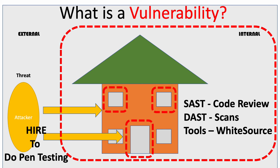The other way is internally. We can use what we define as SAST and DAST. SAST is Static Application Security Testing, which is basically doing code reviews to see whether there's a vulnerability there. DAST is Dynamic Application Security Testing — this is where we do scans; we can scan the house to see if there are any locks. Another way is to use tools like WhiteSource that will flag whether there are actually vulnerabilities in our software, in this case in our house.